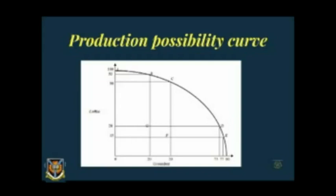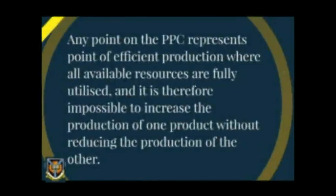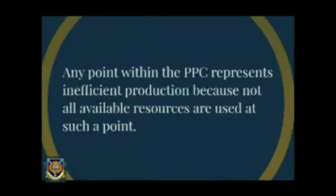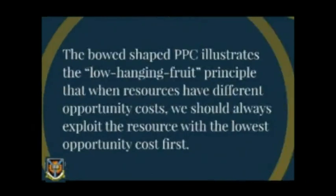This principle of exploiting the lowest-cost resource first is called the low-hanging fruit principle. Any point on the PPC represents efficient production where all available resources are fully utilized, making it impossible to increase output of one product without reducing the other. Any point within the PPC represents inefficient production because not all available resources are being used. A bowed-out PPC essentially reflects the fact that some resources are relatively well suited for one product while others are better suited for another.